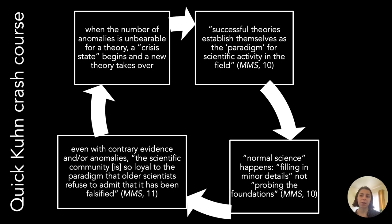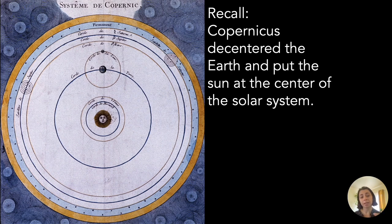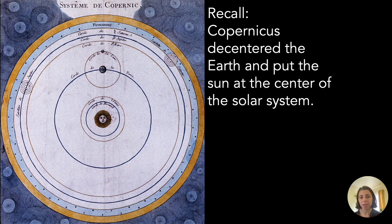You might wonder what relationship the new theory has to the old theory — that's something we'll read about for the end of module essay. The other claim is that modern cosmology de-centers the earth yet again. Remember back in week one: Copernicus de-centers the earth and puts the sun at the center of the solar system. Ballard and Morse are arguing we're actually going to see that de-centering yet again, but with respect to the Milky Way galaxy.